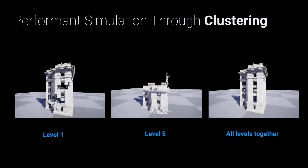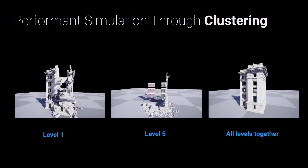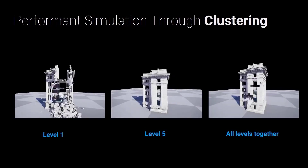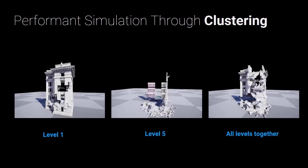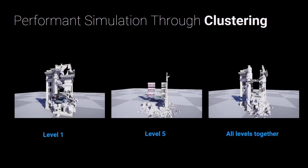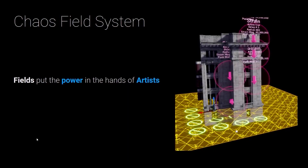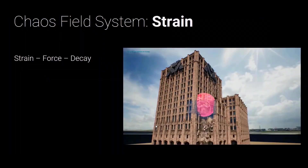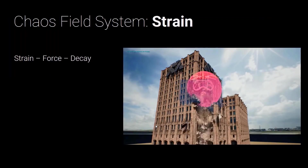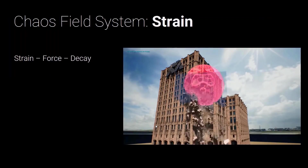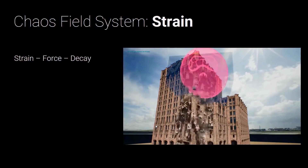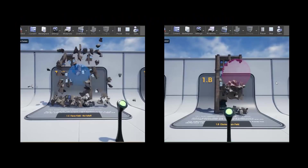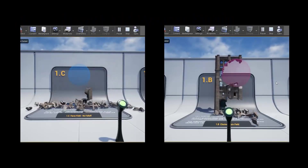Clustering and performance is a way of collecting how the fractures will behave and to what extent. These can be further combined to increase more dynamic results. The field system within the Chaos Destruction tools is a way of directly affecting a physics simulation by occupying a region of space, with varying parameters, in order to produce different behaviors or breakage effects.